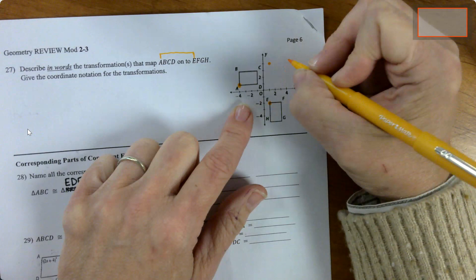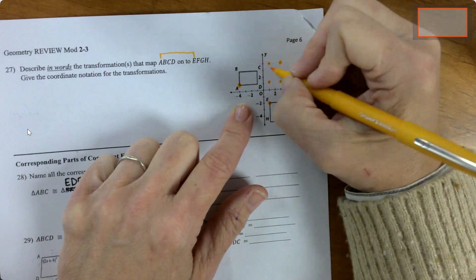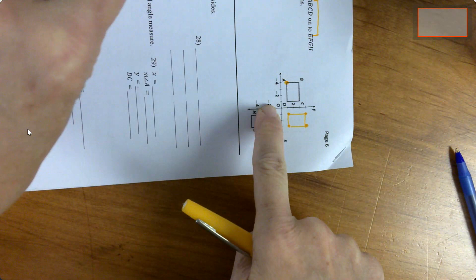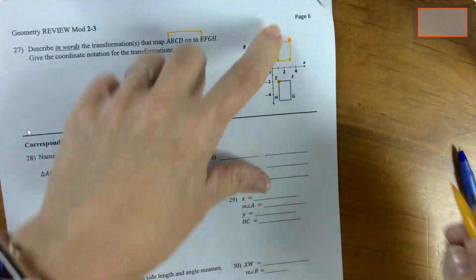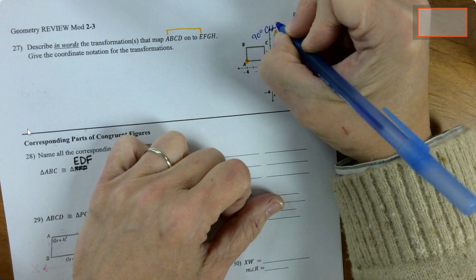Then how many down? So 1, 2, 3, 4, 5, 6. Then I had to move 6 down. So rotate 90 degrees clockwise, we're going in that direction, and then translate 6 down.